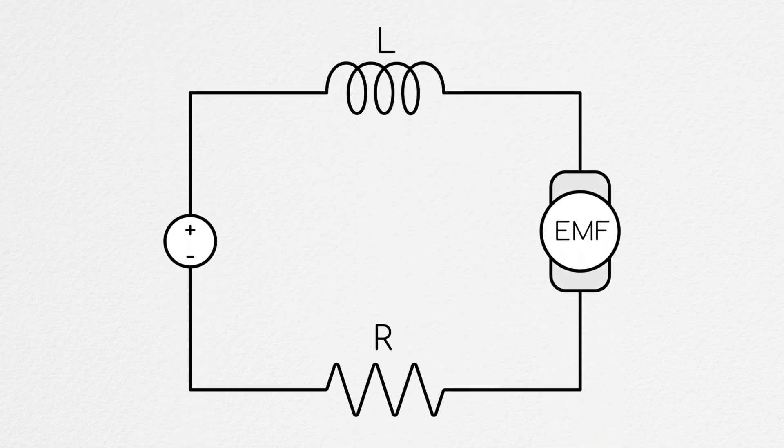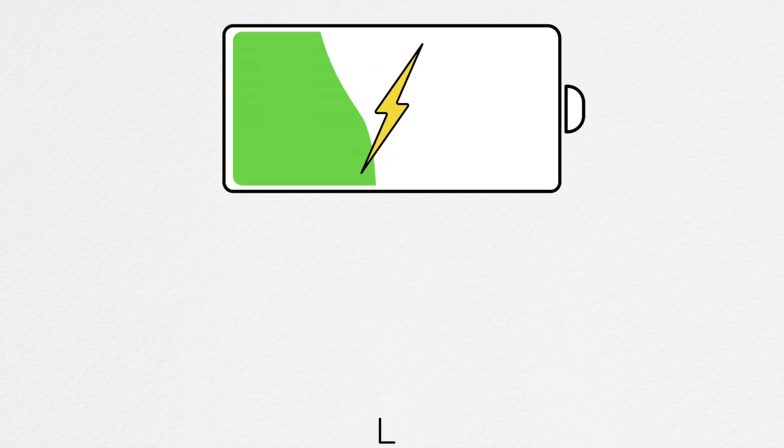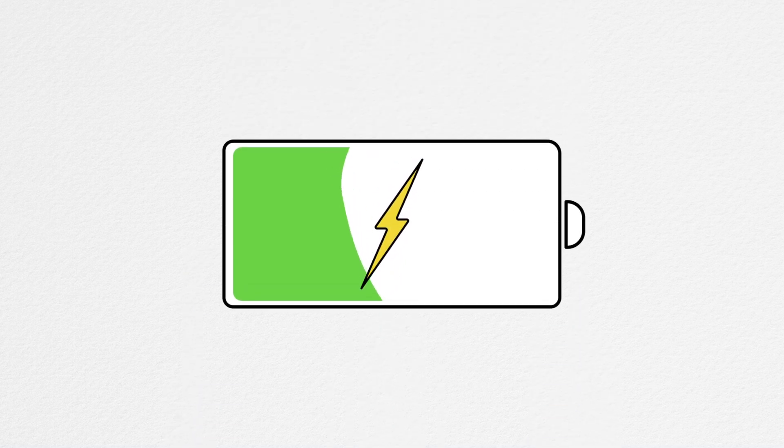If this back EMF is greater than the voltage supplied to the motor, then the net voltage on the system will drive current up from ground back into the supply. If your motor is connected to a battery, this would begin to recharge your battery. So that's the general idea.